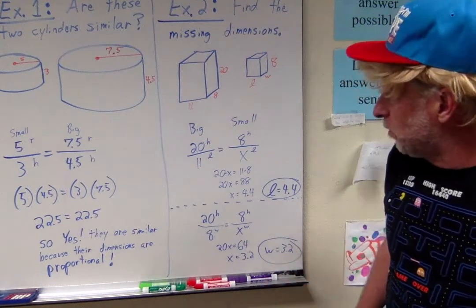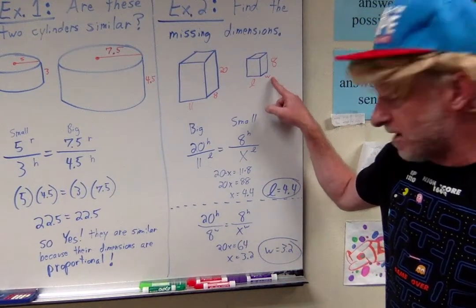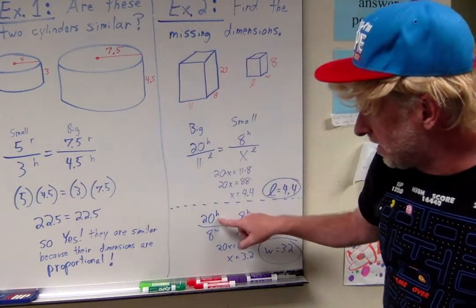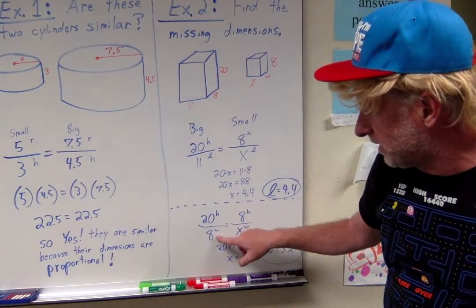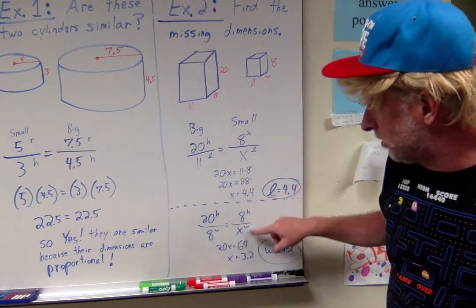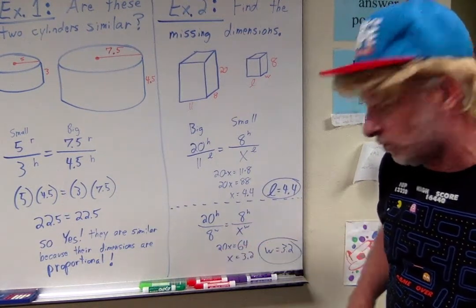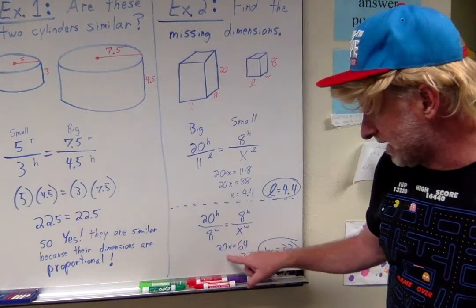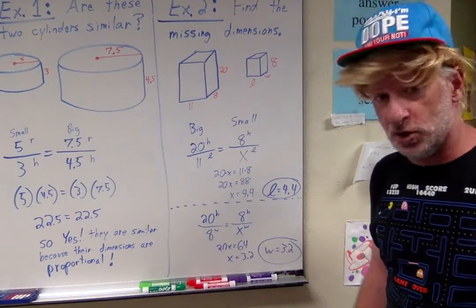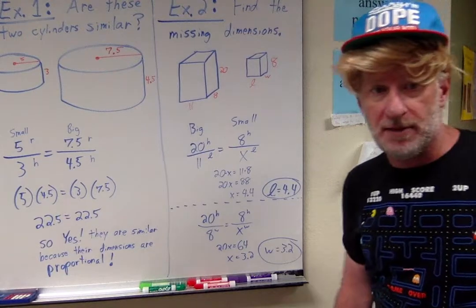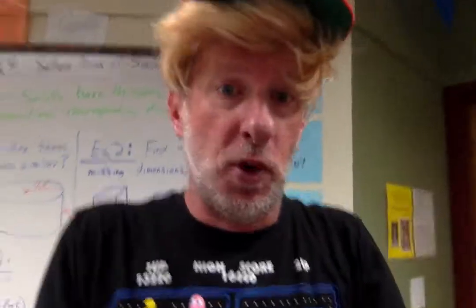We're going to do the same exact thing all over again, except now we're going to look for that width! Right everybody? If 20, the height as compared to the width, is 20 to 8! Then the height compared to the width is 8 to what? Well, 20 times x is the same as 8 times 8, which is 64! Divide both sides by 20! I just proved x is equal to 3.2! That means the width is 3.2!